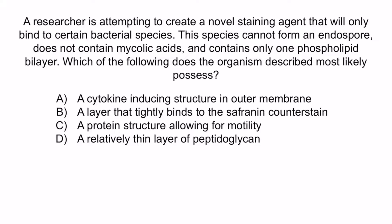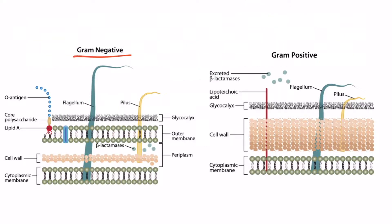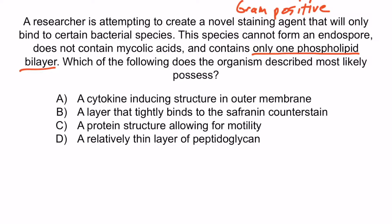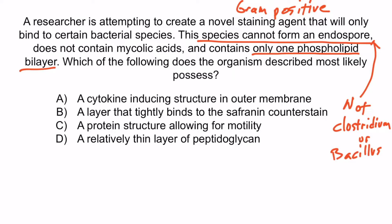From the question stem you should notice that this species is a gram-positive bacteria — we know this because it has only one phospholipid bilayer. Gram-negative bacteria have two phospholipid bilayers: the outer membrane and the cytoplasmic membrane. Gram-positive bacteria don't have that outer membrane. The detail that it cannot form an endospore just tells us it's not a Clostridium or Bacillus species. Knowing we are dealing with a gram-positive organism, the correct answer is choice C: a protein structure allowing for motility — this of course is describing a flagellum, which is not unique to gram-positive or gram-negative organisms.